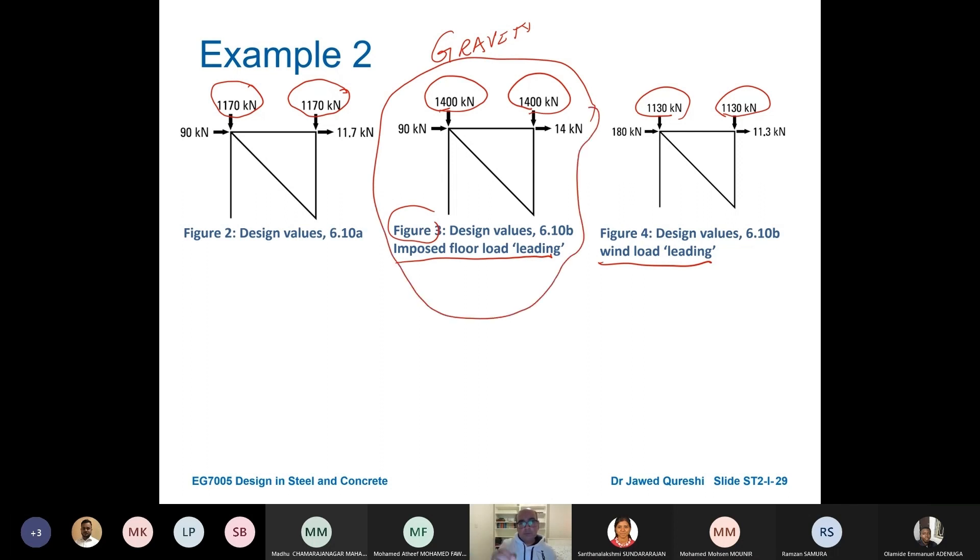Which is this one. For wind now tell me for wind loading which combination will you go for? Figure four, excellent. So here you can see that this is 180, in other cases it's 90. So this is the worst case scenario. This is the worst for gravity and if I am designing for gravity vertical loads then I will choose this combination. If I'm designing for wind then I will choose this combination.